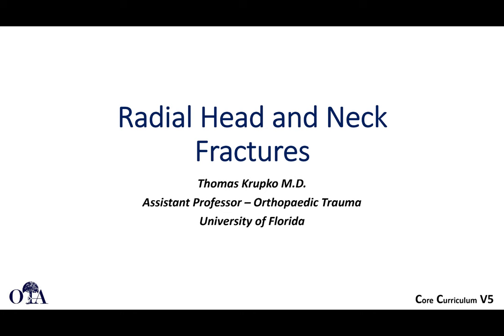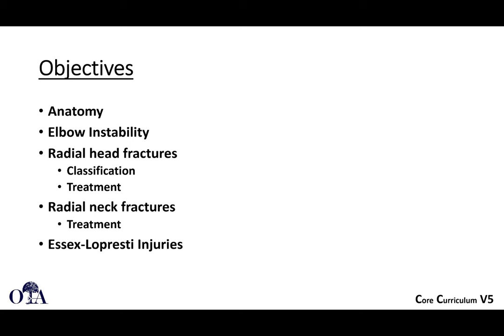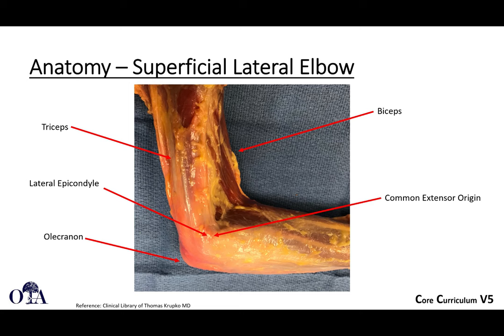Radial head and neck fractures. This is from the OTA core curriculum resident lecture series version 5. Slides are by Dr. Thomas Krupko and Amsaka Bramon narrating. The objectives include anatomy, elbow instability, classification of radial head fractures, treatment, radial neck fractures and their treatment, and Essex-Lopresti injuries. In this first video, we'll focus mostly on anatomy, concepts of instability, and surgical approaches, with treatment covered in the next video.